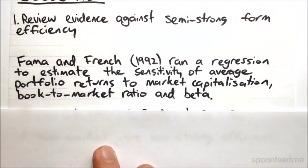So, Fama and French in 1992 ran a regression to estimate the sensitivity of average portfolio returns to market capitalization, book-to-market ratio, and beta.